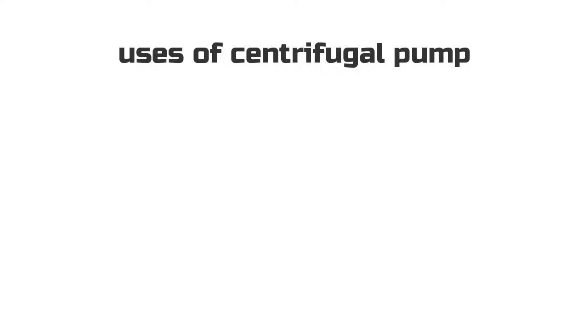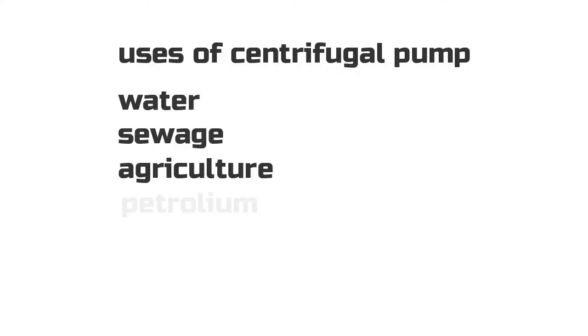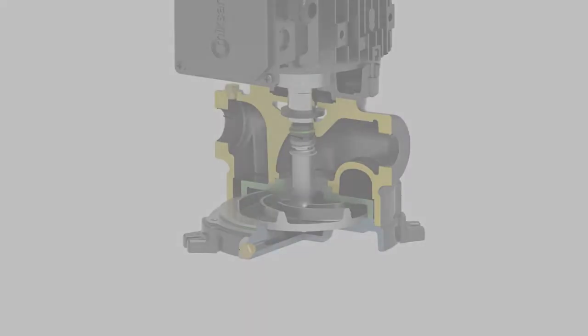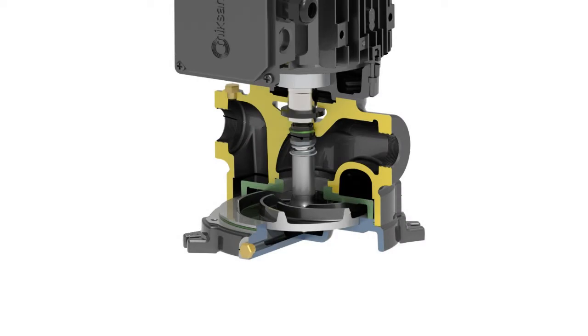Common uses of centrifugal pumps include water, sewage, agriculture, petroleum, and petrochemical pumping. Centrifugal pumps are often chosen for their high flow rate capabilities, mixing potential, as well as their relatively simple engineering.